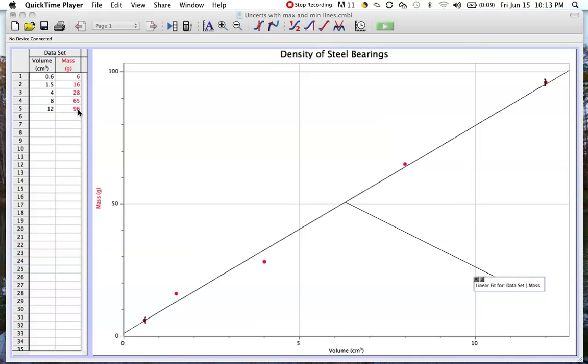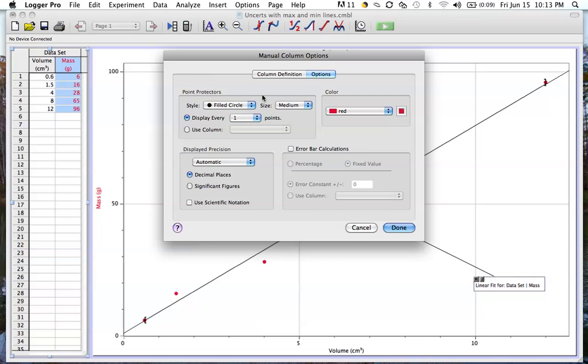Just double-click on the mass and click on the options, and you see that there's a box here called error bar calculations. I'm going to click that.